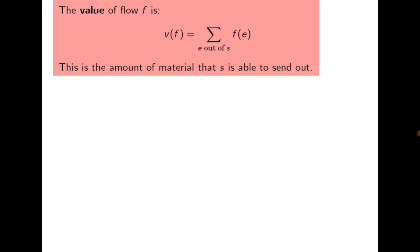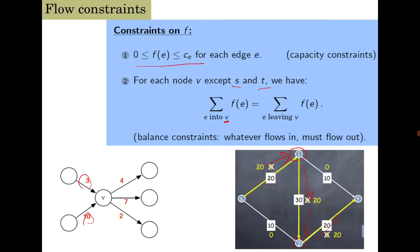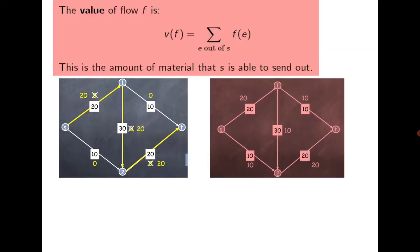Once we have introduced the concept of flow, the value of the flow is the amount of flow going out of s, which equals the flow coming into t. We are not saying this is maximum or minimum — simply a flow. In the first example, flow 20 is going out of s, so the value of the flow is 20. In the second case, 20 plus 10 equals 30 goes out of s, and the same 30 comes into t.